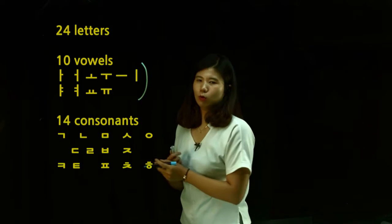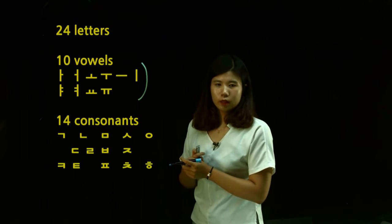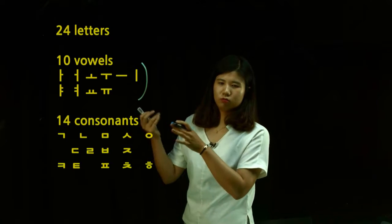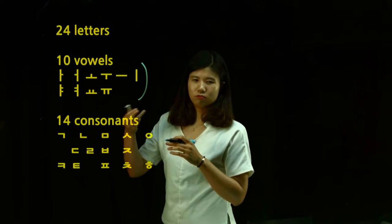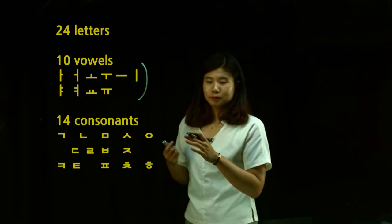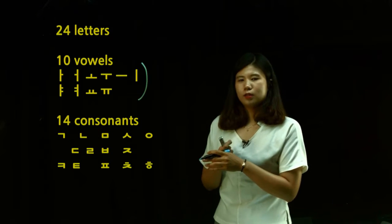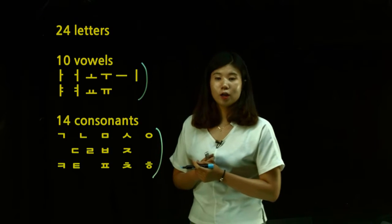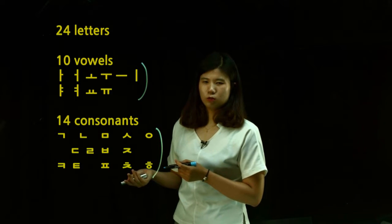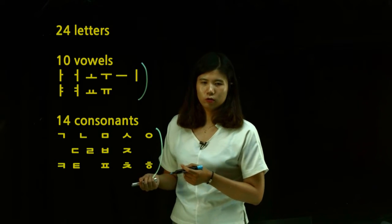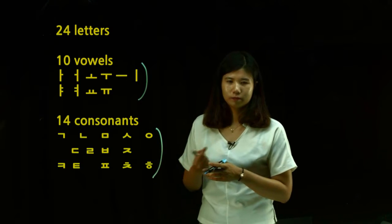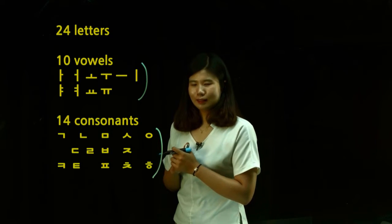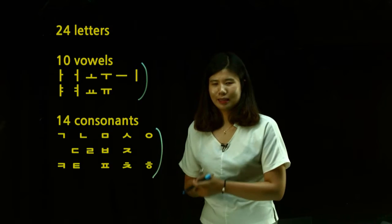These are vowels — there are 10 of them. Right now they might look like a bunch of lines, but if you get to know them, you'll see how easy they are. And we have 14 consonants. These may look like a bunch of squares and weird-looking circles, but as you get to know them, you will see there is nothing as easy.